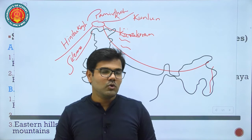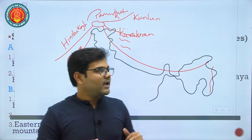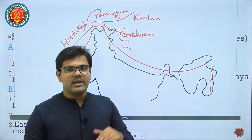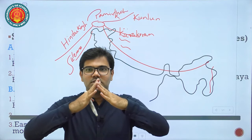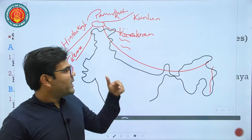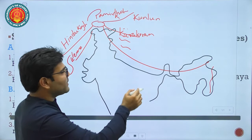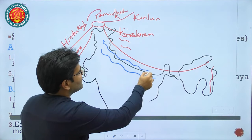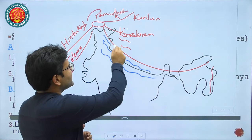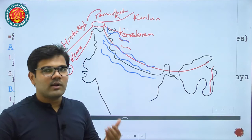Mount Everest's height is still increasing year by year because these plates continue to collide. Earlier it was 8,848 metres; now it is 8,848.86 metres. The Himalayas can be divided from north to south into: Trans-Himalayas (Karakoram, Ladakh, and Kailas ranges), Greater Himalaya or Himadri, Lesser Himalaya or Himachal, and the Shivalik range.